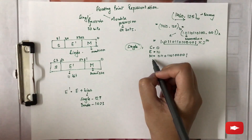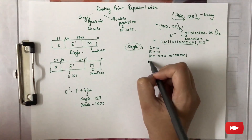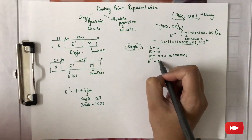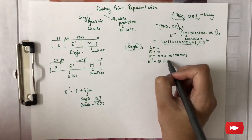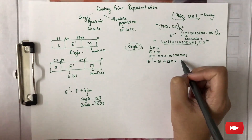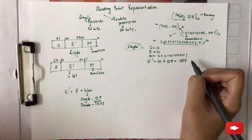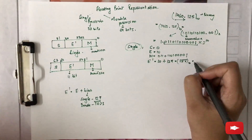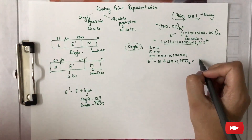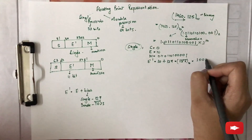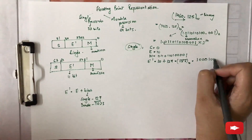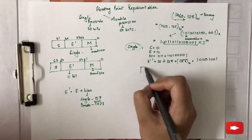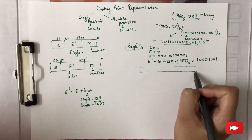Now we need to calculate the modified exponent e-dash, which is e plus bias. Here e is 10 and the bias for single precision is 127, so e-dash = 10 + 127 = 137. Converting 137 into binary gives 10001001. Now you have all the values and just need to represent them in single precision format.